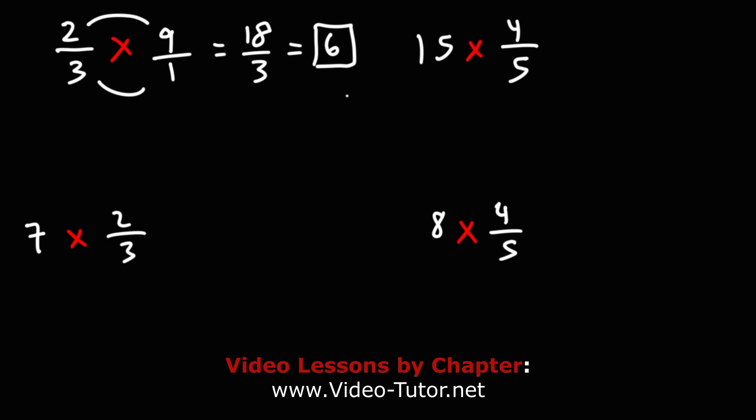For the second example, 15 times 4 fifths, we can write this as 15 over 1, and then multiply across. 15 times 4 is 60. 1 times 5 is 5. 60 divided by 5 is 12.